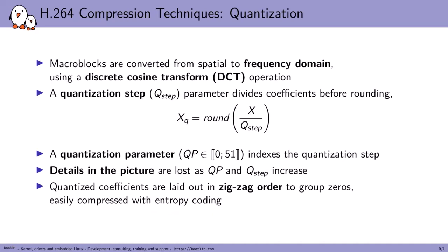Another compression technique at the core of H.264 encoding is quantization. Each macroblock is converted into the frequency domain using a Discrete Cosine Transform (DCT). Then a quantization step is applied — dividing each frequency-space coefficient before rounding and keeping those quantized values. The bigger the quantization step, the more quality we lose — we lose information on the frequency-space coefficients. The quantization step is indexed by a quantization parameter (QP), which we can use to control the quality of the encoding.